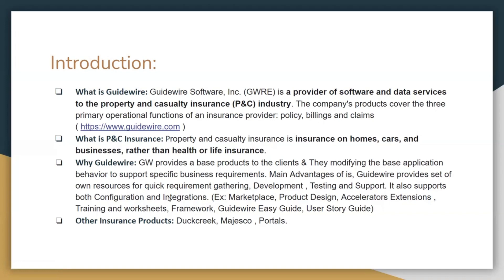Guidewire provides resources covering how to perform requirement gathering, how to develop, how to perform testing, and support. All the documentation is given by Guidewire itself. It is similar to the QA part — they provide templates on how things should be maintained, how user stories should be written, how acceptance criteria should be written, and how development should be done. Everything is provided by Guidewire itself, and those resources are available in actual projects for the team to leverage.